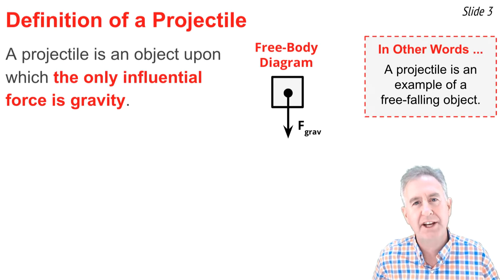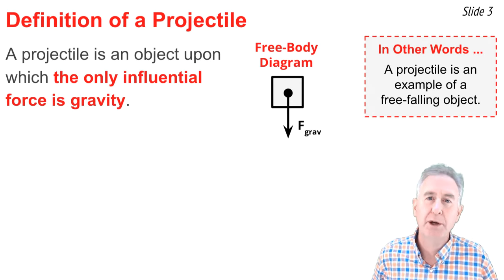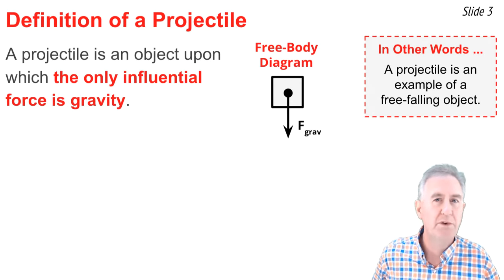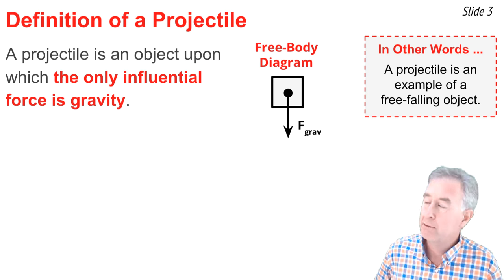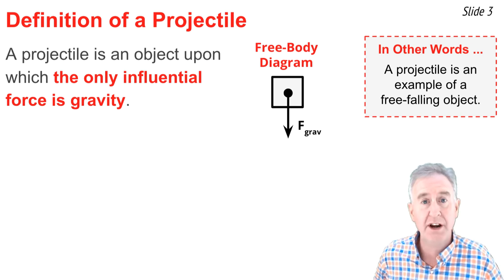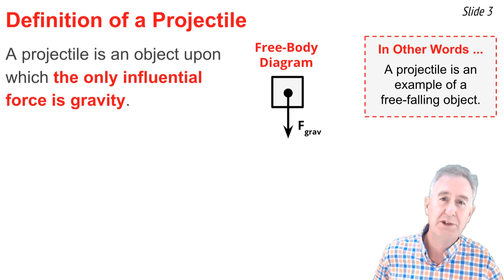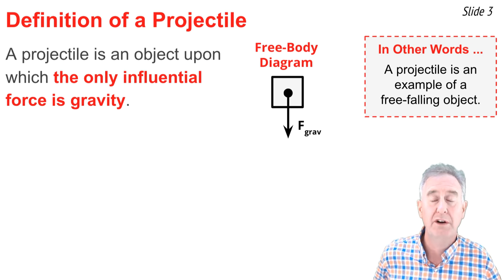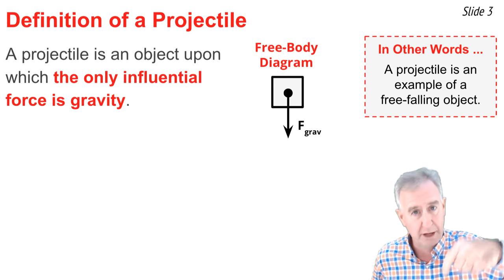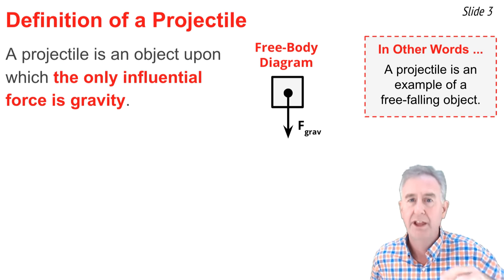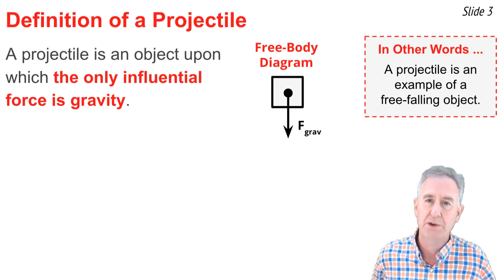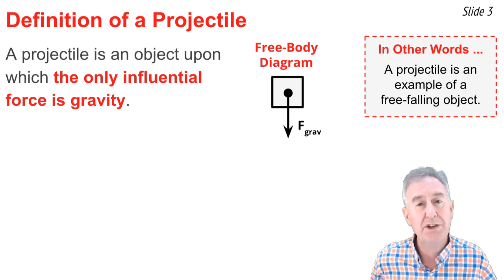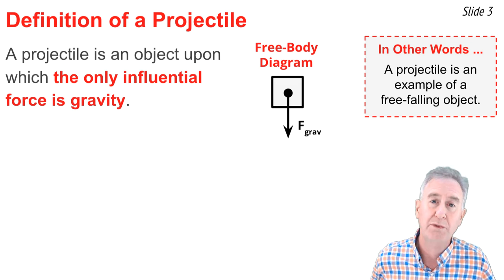A projectile is defined as an object upon which the only force of influence is gravity. The free body diagram for a projectile is shown here. You'll notice there's only one force here — gravity directed downwards. There's no air resistance affecting the motion of a projectile. We refer to such objects as free-falling objects.